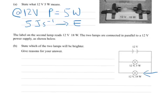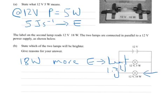So the answer is that this lamp here is brighter, the 18 watt, because it means it's converting more energy into heat and light per second.